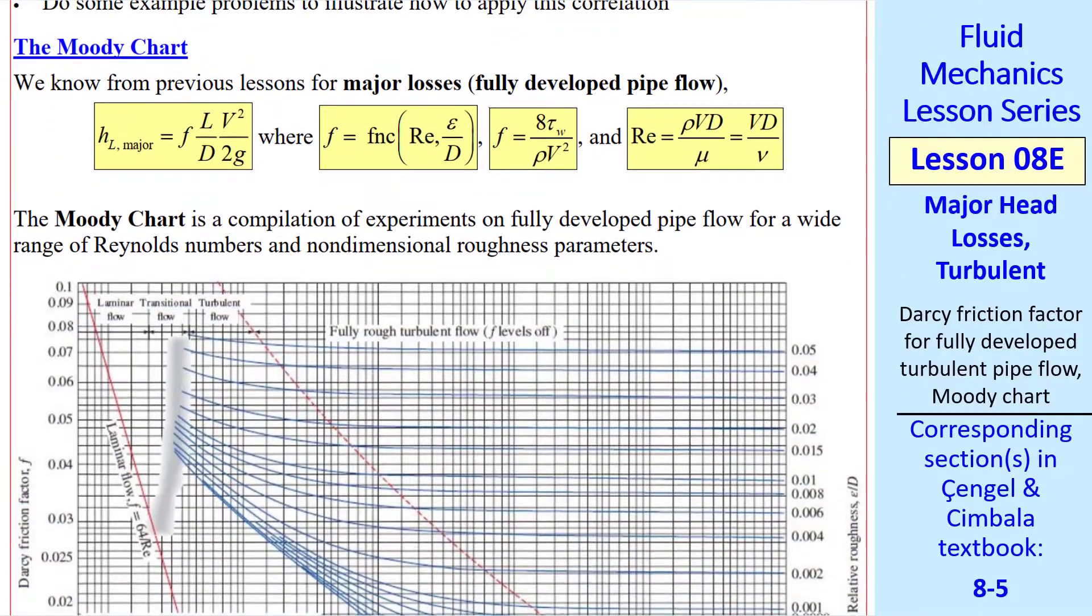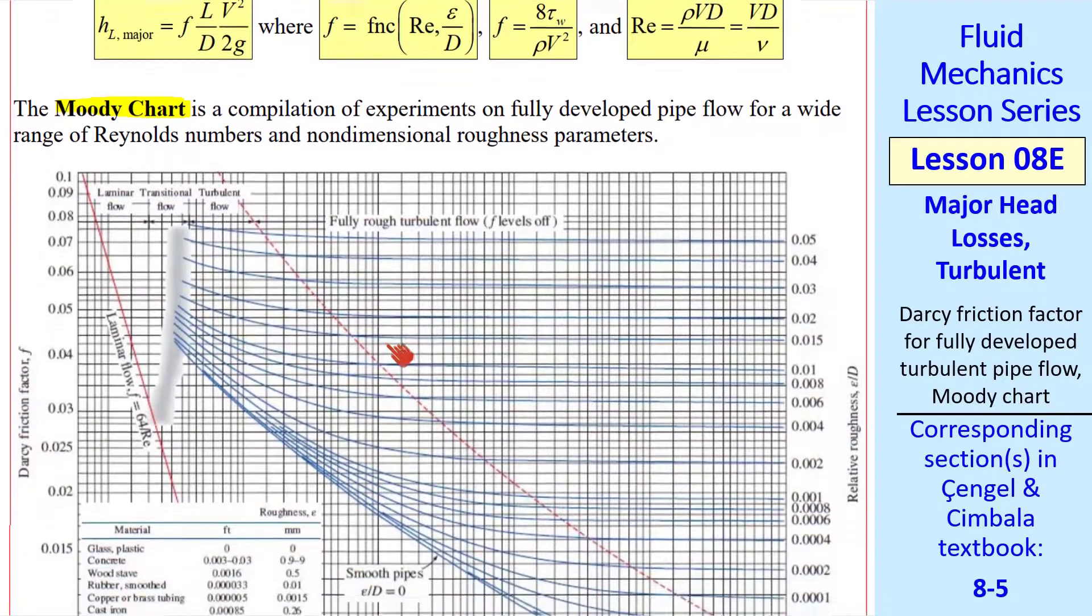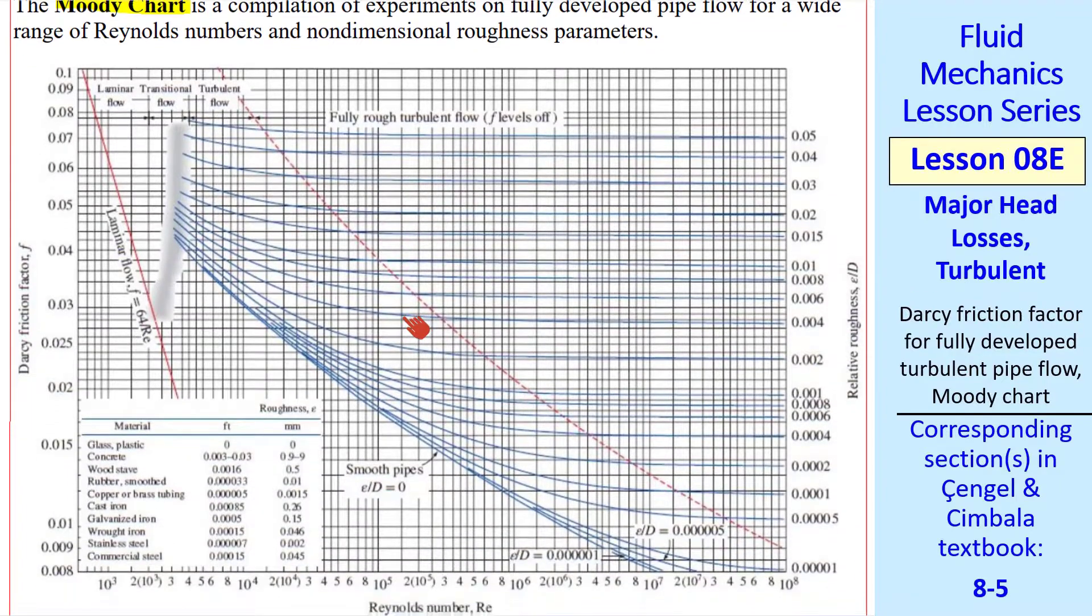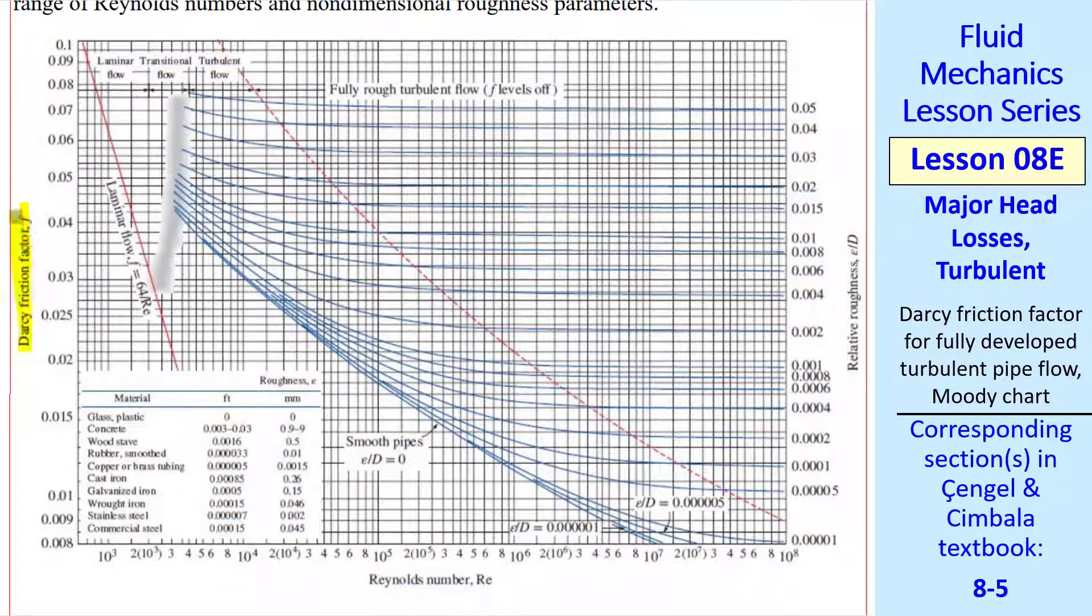Let's talk about the Moody chart first. We're talking about major losses, which hold for fully developed sections of pipe. The major head losses are given by this equation, where Darcy friction factor F is a function of Reynolds number and pipe roughness over diameter, the non-dimensional roughness ratio. This is the definition of F and Reynolds number. We use hydraulic diameter if the pipe is not round.